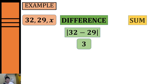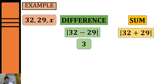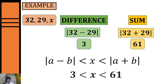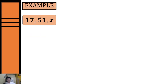Next, we get the sum: 32 plus 29 equals 61. After getting the difference and the sum, we can now determine the range of the possible length of our third side — it will be from three to 61. All the numbers between three and 61 can be a possible measurement for our third side.